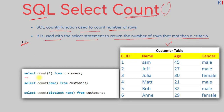For example, we can write SELECT COUNT(*) FROM customers. Because we are passing in the wildcard selector asterisk, the COUNT function will count the number of records the customers table has, so this query will return the number six.